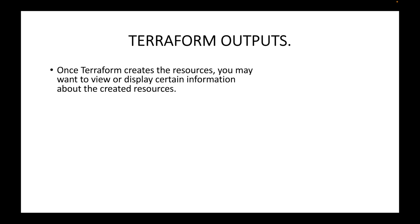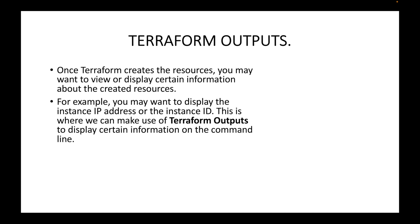Terraform outputs can be used whenever you want to display some information about the resources. You may want to view certain information about the resources that you are creating using Terraform. For example, if you are launching an EC2 instance, you may want to display the IP address — the public IP or private IP — or simply the instance ID. All this information you can display by making use of Terraform outputs, which will tell Terraform to display certain information on the command line itself.